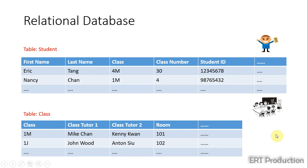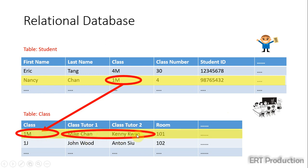For a database, data of different tables can be related together. For example, we know that Nancy Chen here is studying in 1M class. And by searching the record of 1M in the class table, we know that the class tutors of Nancy are Mike Chen and Kenny Guan.